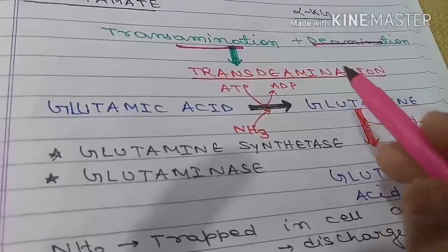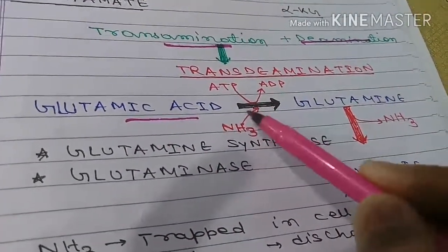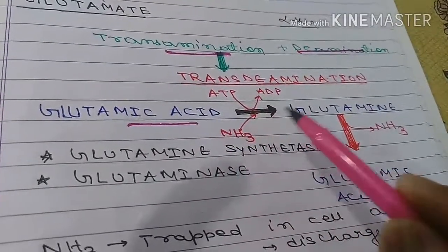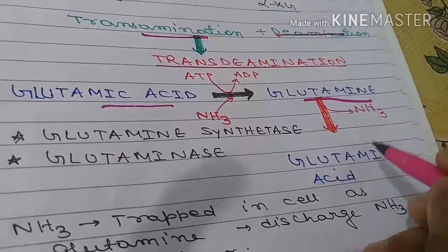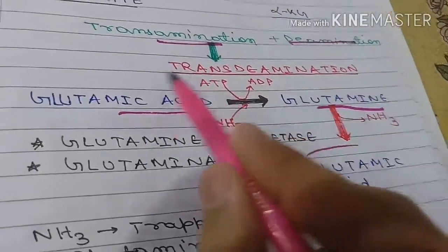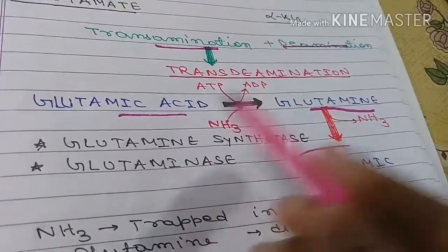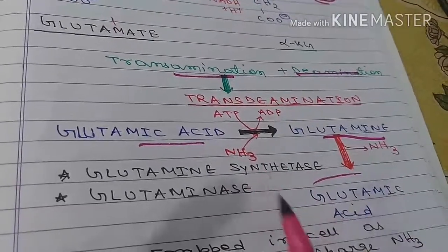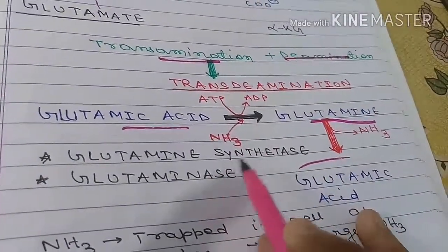The next part is ammonia trapping — how ammonia is trapped. Glutamic acid, in the presence of NH3 and with ATP energy, forms glutamine. This glutamine travels to the liver and releases ammonia there. Glutamic acid is thus the molecule that carries ammonia from tissues to the liver. This trans-deamination process is also a method to trap and transport ammonia, which is then released in the liver from glutamine back to glutamic acid.